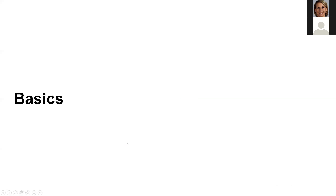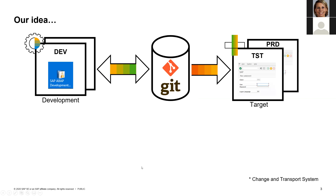The very basic idea of GCTS is that you can use a Git repository to store your ABAP development. Starting in your development system, you create new ABAP objects, and when you release the transport request, you push these objects to a Git repository. Your development, test, and production systems are all connected to this repository, so you can check what's there and deploy the latest commit to your test and production systems.